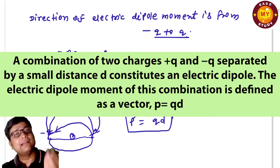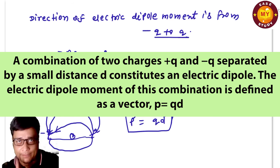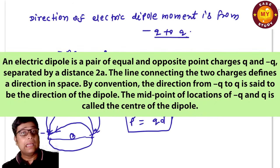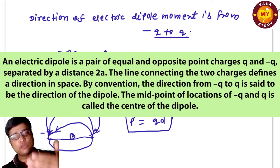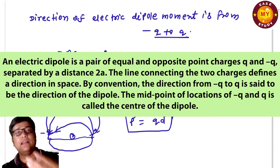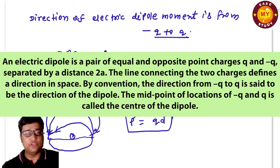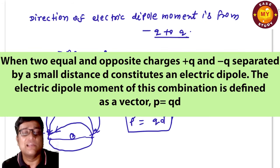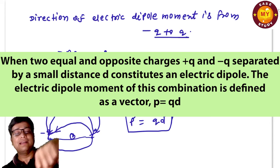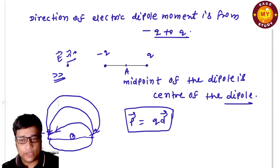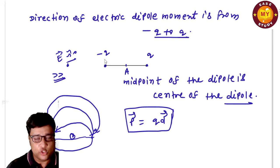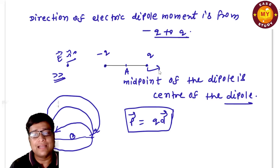It constitutes an electric dipole and has a dipole moment p = qd. Another definition (NCERT): a pair of charges ±q separated by distance 2a, with dipole moment p = q × 2a. The line joining −q to +q is called the axis of the dipole. The dipole moment is generally denoted by small p.